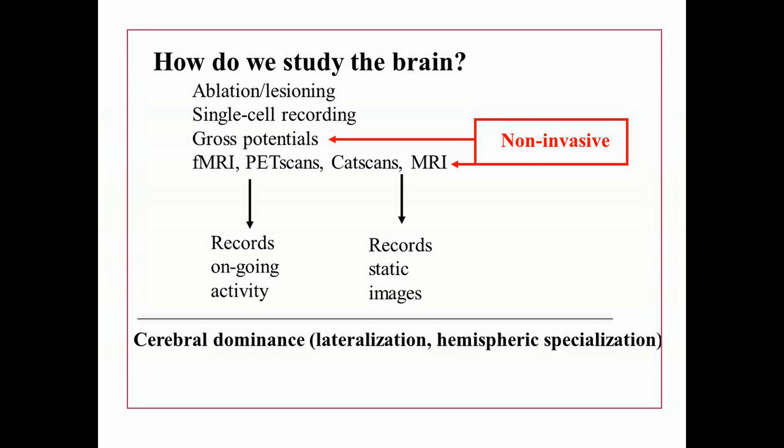Functional MRIs and PET scans record the ongoing activity of the brain. You can, for instance, watch how active different parts of the brain are while a person works a math problem — that's exciting. CAT scans and MRIs, on the other hand, are records of static or still images of the brain, and very useful when someone has a brain tumor or damage to the brain. You can see in very great detail the exact location of that damage or that tumor.